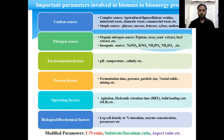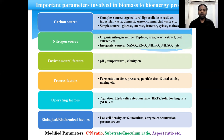Another important factor is the biological or biochemical factors such as percent inoculum, enzyme concentration, and precursor. In addition to this, there are some modifier factors such as C:N ratio (carbon to nitrogen ratio), substrate to inoculum ratio, and aspect ratio (height to diameter ratio) of your process equipment, which play a very important role in the biomass to bioenergy processes.